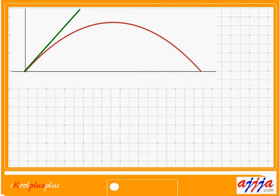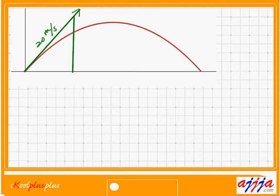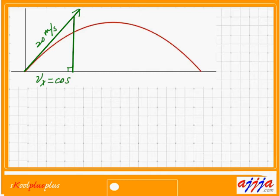A football player kicks the ball at 20 meters per second velocity in this direction. Step number one: find the x component and y component. Make a right triangle. We're talking about speed, not distance. The x component velocity equals cosine of that angle times the original velocity V zero — so cosine theta times V zero.